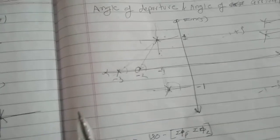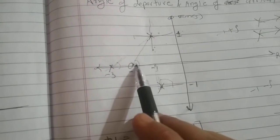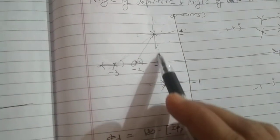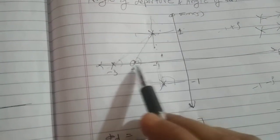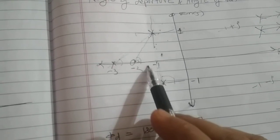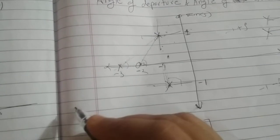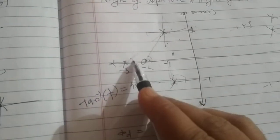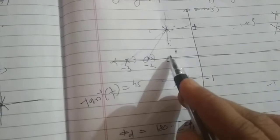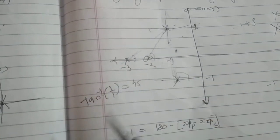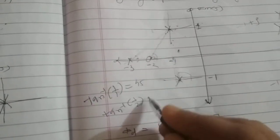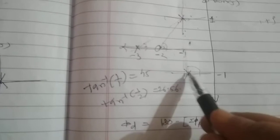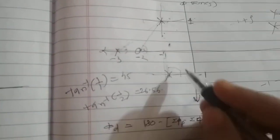First we will measure this angle. This value is minus 1 minus 2, that is 1, so this angle is tan inverse of 1 by 1, which is 45°. For the next angle, this is 1 and this is minus 1 minus 3, that is 2, so tan inverse of 1 by 2, which is 26.56°. And this angle is 90°.